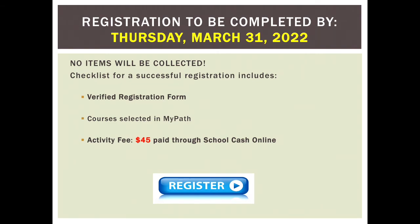Registration is to be completed by Thursday, March 31st. There are three things you need: your verified registration form — this was emailed to you a couple of weeks ago, so make sure it's up to date, and if changes need to be made, email them back; your courses selected and put into your backpack in MyPath; and lastly, you need to pay your activity fee of $45 to School Cash Online. That pretty much sums up everything. Read over the option advice sheet, research your universities and colleges and their programs, look at our course offerings, get informed, and complete your registration by March 31st. If you have any questions or concerns or need a little help, please don't hesitate to book an appointment with me in guidance. Thanks, STM.